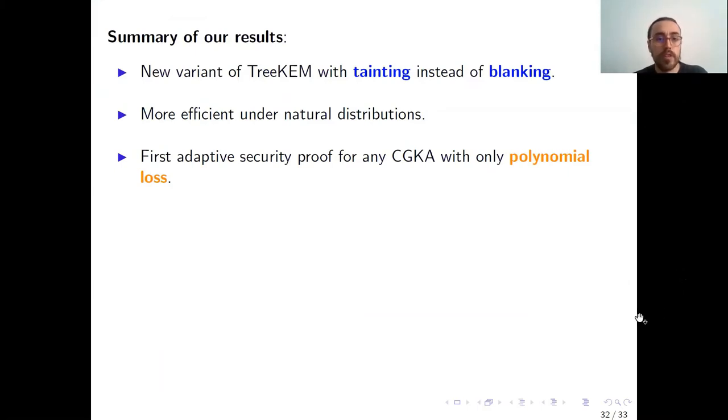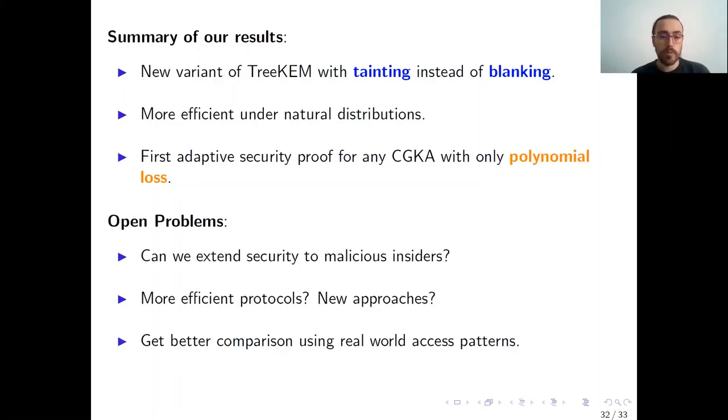So to summarize our results, we propose a new variant of TreeKEM based on tainting instead of blanking. We show it more efficient under natural distributions, and we provide the first adaptive security proof for any CGKA that only has polynomial loss. Before finishing, just to outline a few open problems. So the first one would be, can we extend security to malicious insiders? The second one, are there more efficient protocols out there? So most of the approaches that we've seen so far are based on TreeKEM or variants of it. So maybe a completely new approach works. And the third one is, can we get a better efficiency comparison using real world access patterns, which we didn't have access to when we wrote this paper. And with that, I conclude my talk, and I thank you for your attention.